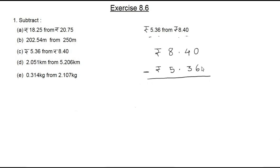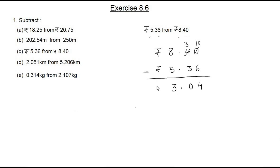It is not possible to subtract 6 from 0, so we take a borrow — the 4 becomes 3 and the 0 becomes 10. So 10 minus 6 is 4, 3 minus 3 is 0. Copy the decimal point at the same position, then 8 minus 5 is 3. This is in rupees, so our answer is rupees 3.04.